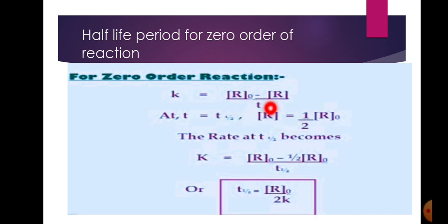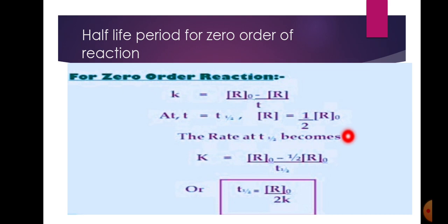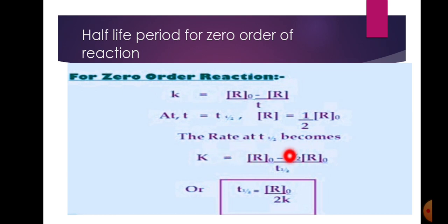Setting t equal to T½, and the concentration R equal to R₀/2, we get T½ is equal to R₀ minus half of R₀, upon k, which simplifies to T½ = R₀ / (2k).